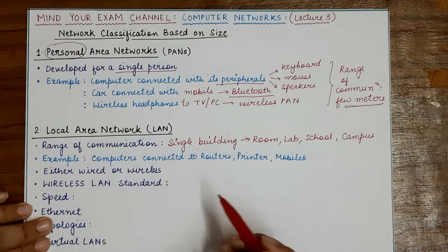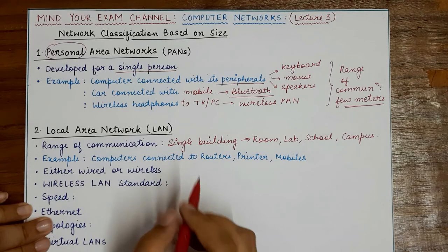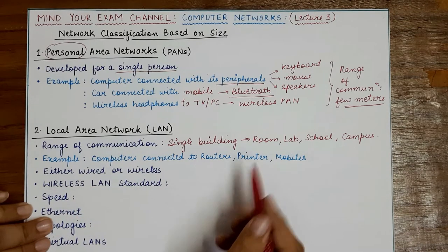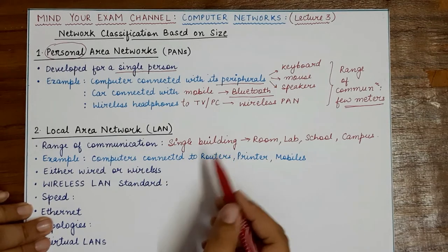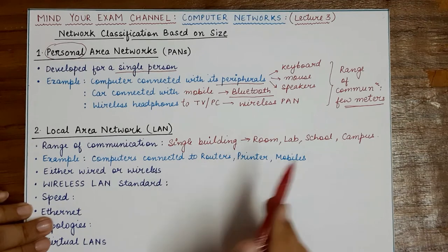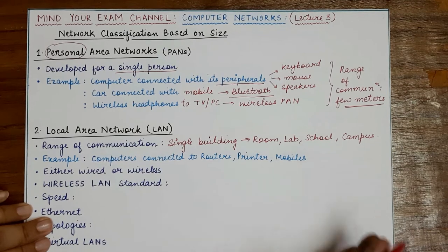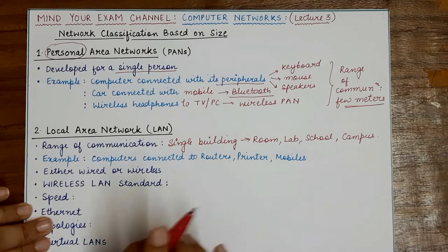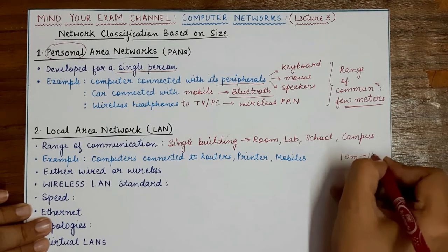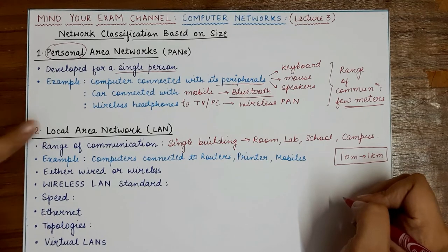The most common example of a LAN is having multiple devices connected in the area of your room — with a router, you can wirelessly connect mobile phones and printers via Wi-Fi, or connect computers and laptops through cables. In school or college labs, multiple computers are connected to the same internet connection and also communicate among themselves, forming a larger but still local area network — because all devices are within 10 meters to one kilometer.